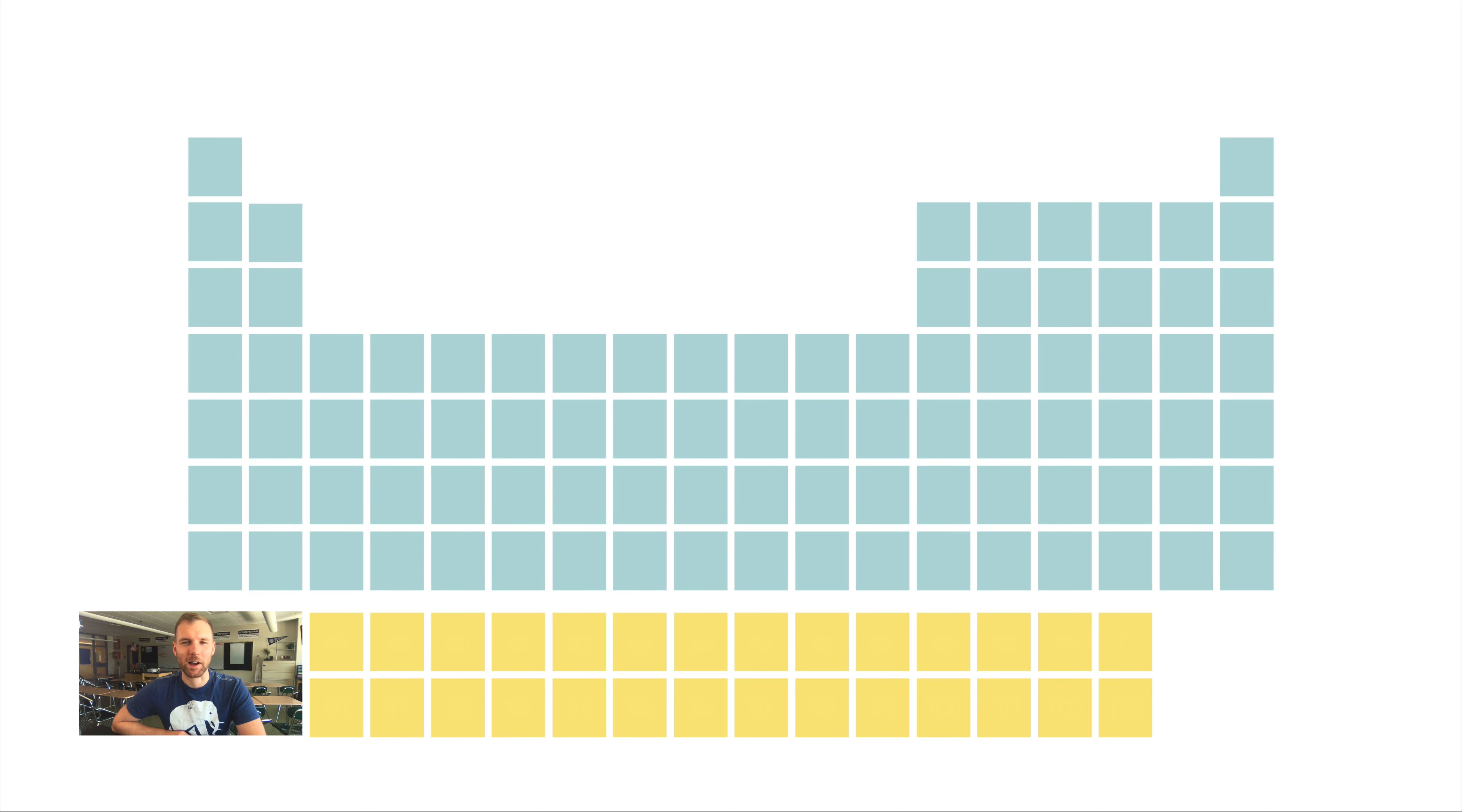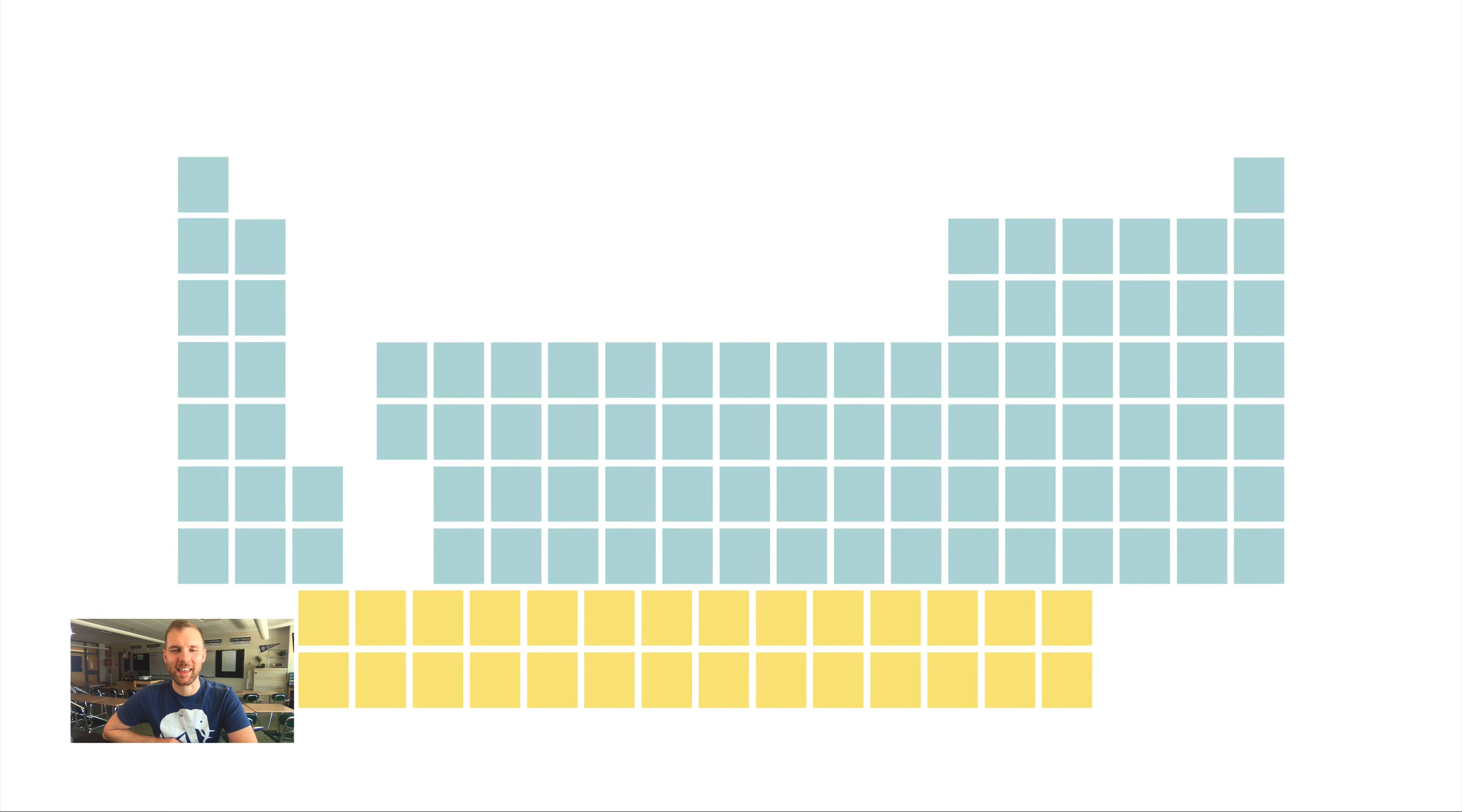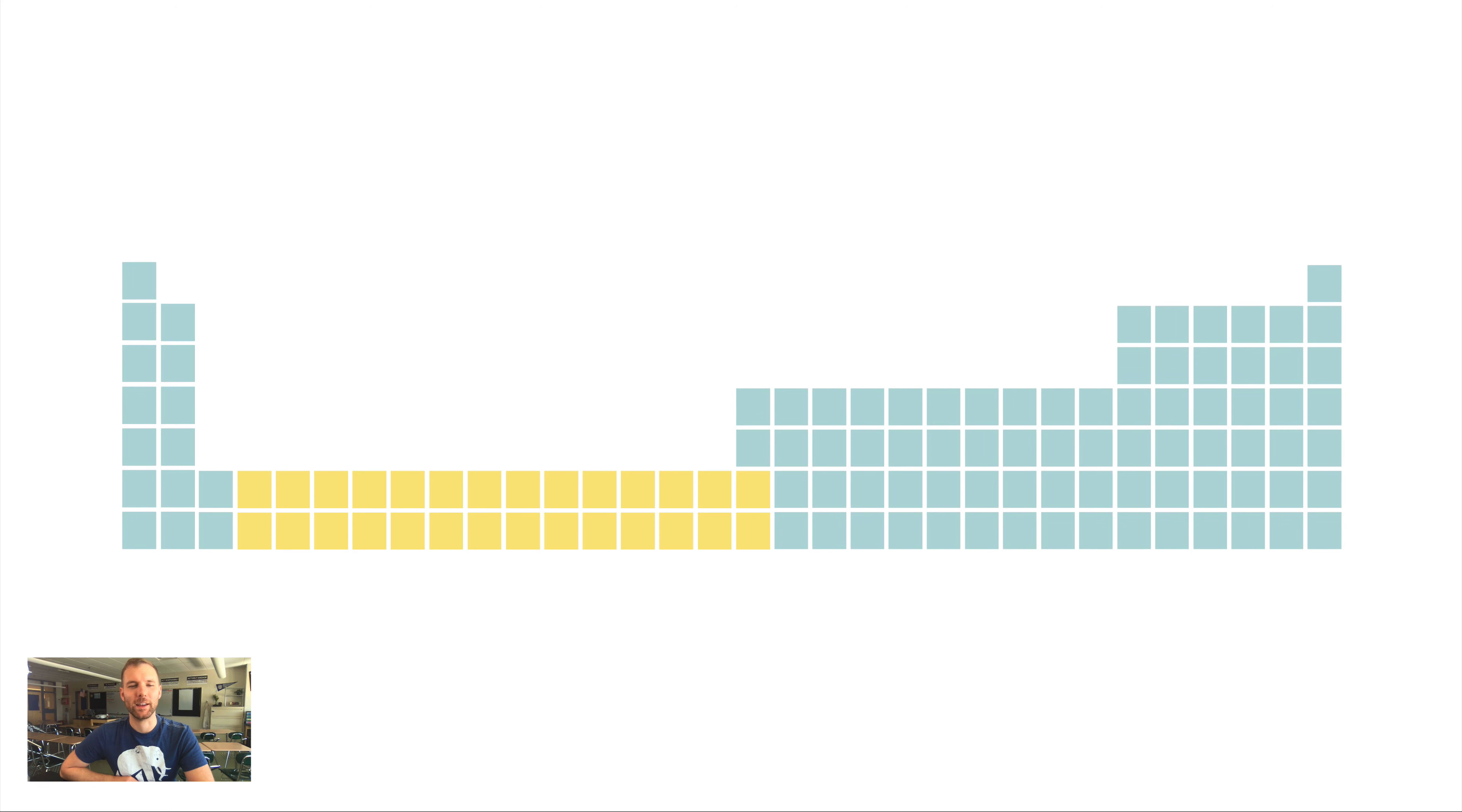This piece down here, students ask about this quite a bit—the shape of the table. Let's just talk about that. The shape of the table overall is kind of strange, and there's always part of the table that's separated and put below. But the truth is that piece fits in right here.